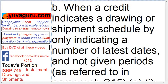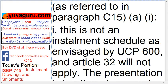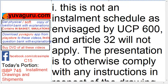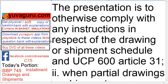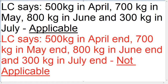Part B: when the credit indicates a drawing or shipment schedule by only indicating a number of latest dates, remember this is not an installment schedule and not 'given periods' as in A. This means Article 32 of UCP 600 will not apply. However, the presentation must otherwise comply with any instructions in respect of the drawing or shipment schedule, and UCP 600 Article 31 on partial drawings and shipments will still apply.